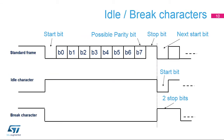The previous slide described a standard frame. This slide shows an example of an 8-bit data frame configured with one stop bit. An idle character is interpreted as an entire frame of ones, including the number of stop bits. A break character is interpreted as receiving all zeros for a frame period. At the end of the break frame, two stop bits are inserted.